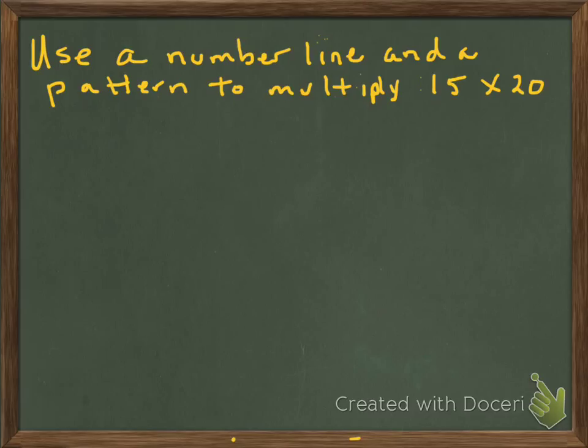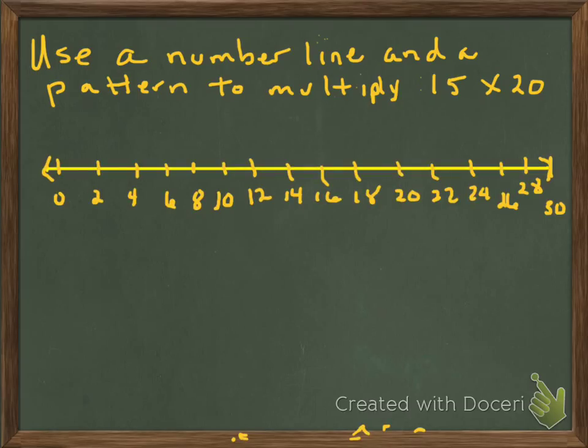Here's an old friend. How about if we use a number line and a pattern, and we're going to multiply 15 times 20. So the first thing I'm going to do is I'm going to draw my number line. And if you give me a second, I'll have it done. So the first thing I'm going to do is I'm going to draw my number line. Hopefully this is pretty good. And I'm going to pattern 15 times 2.